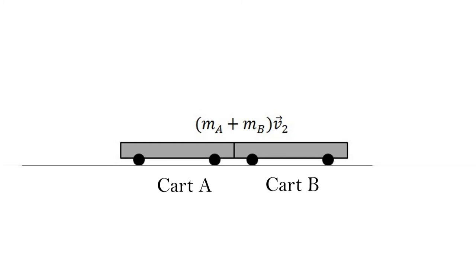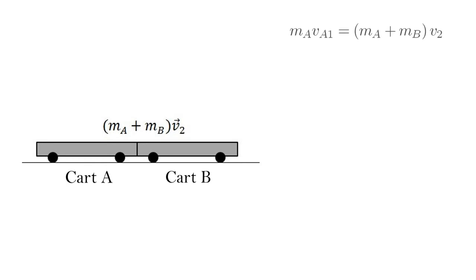Knowing this and working from our conservation of momentum equation, we can solve for the final velocity V2 in terms of our masses and our initial velocity, which we will measure.